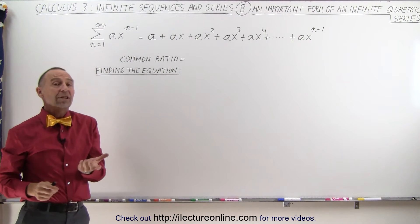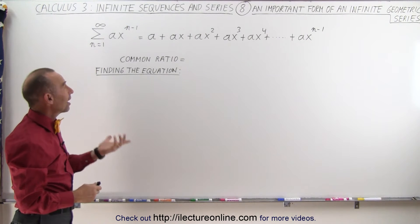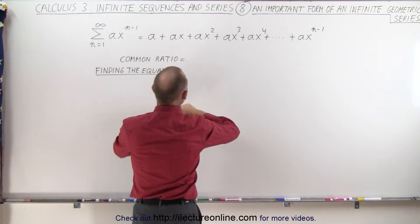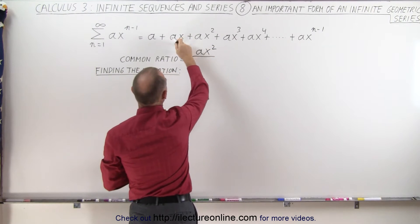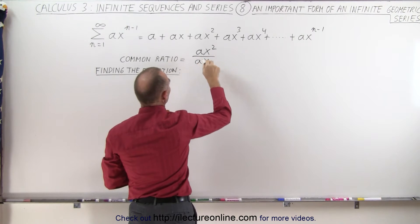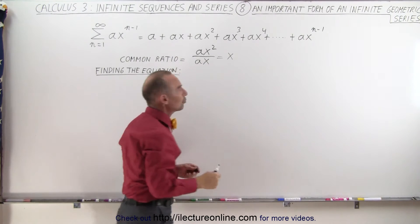To see what kind of series it is, and of course the title gives it away, it's a geometric series, let's find the common ratio. We take one term, let's say ax squared, and we divide by the previous term ax, so this becomes x, and so x is what we call the common ratio.